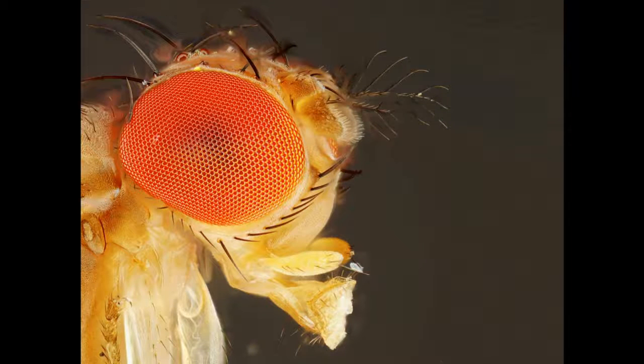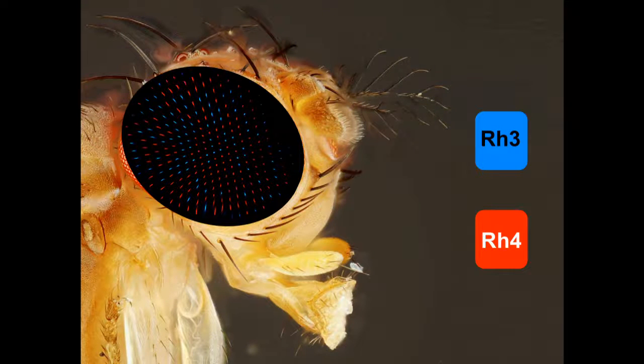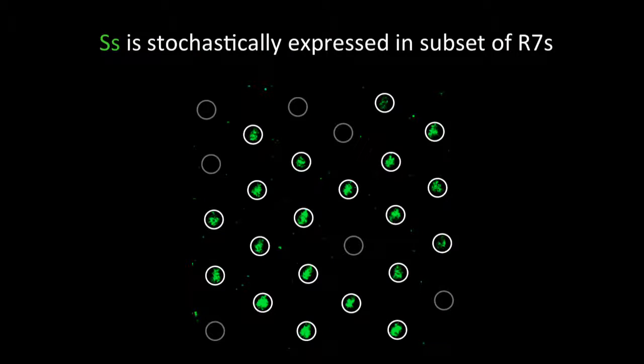Much like the human eye, the fly eye also exhibits a random distribution of photoreceptive cells. Here I'm showing the R7 cell that expresses either rhodopsin 3 in blue or rhodopsin 4 in red. This is controlled by the stochastic expression of the transcription factor, spineless. These are R7 cells, and you can see that spineless is expressed in just a random subset.